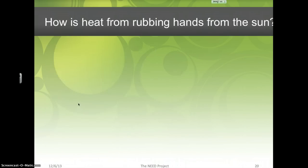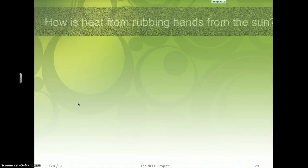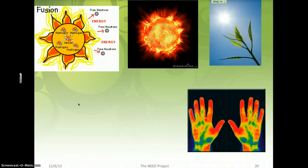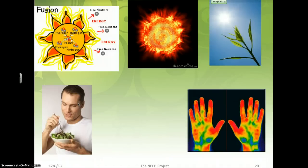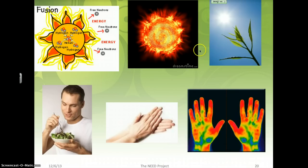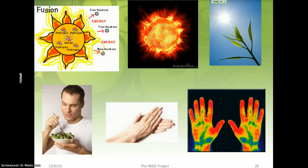Here's a challenge example — how does energy start at the sun and end up as heat from rubbing your hands? The sun produces solar energy, which goes into a plant as chemical energy. You eat the plant, and that chemical energy gives you mechanical energy to rub your hands, which creates thermal energy from friction. Everything you do essentially starts from the energy of the sun, constantly changing from one type to another.